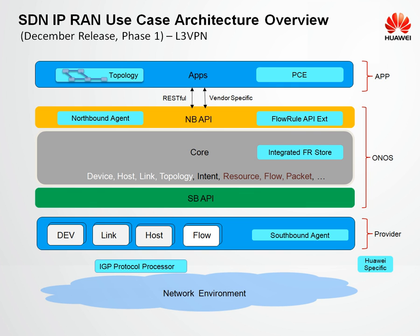I'm going to show you how you could create an application with ONOS playing the operating system role on a controller and programming the network elements to provide end-to-end service. There are various agents of Huawei, which are plugins to ONOS developed by Huawei, which plug into ONOS and can manage Huawei-specific resources. Similarly, ONOS provides a Northbound interface, which is a standard model, and Huawei provides an agent which plugs into ONOS so it could talk to the applications.